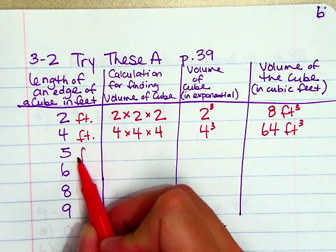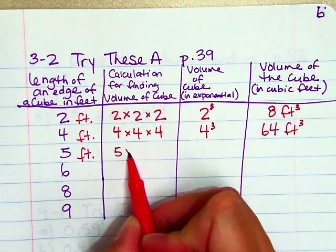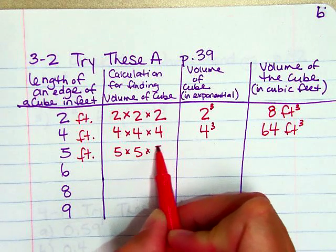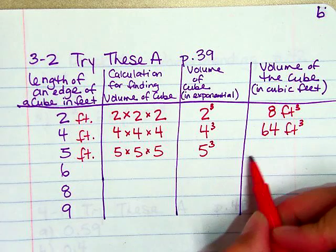So then I'm going to go ahead and write 5. What if the edge was 5? 5 cubed which is 125.